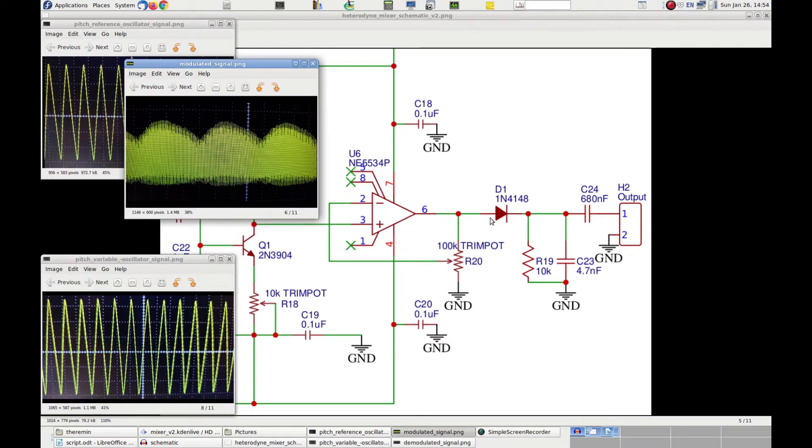However, we cannot pass the signals from the collector of Q1 directly to the diode, because this signal is too low with respect to the minimum voltage required by the diode to conduct current. To resolve this problem, I put in between the diode, the transistor and op-amp configured as a voltage amplifier. The input R20 is tuned so that the amplification of the signal is enough to have an output signal that onsets the diode. This way we end up with a signal at pin 6 of the op-amp that has the same shape of the one on pin 3, but with a greater amplitude.